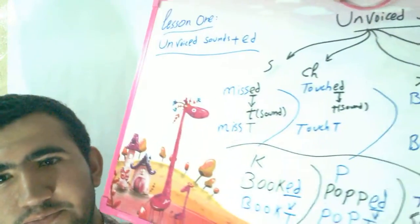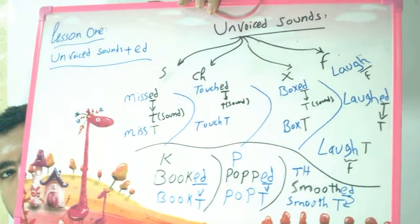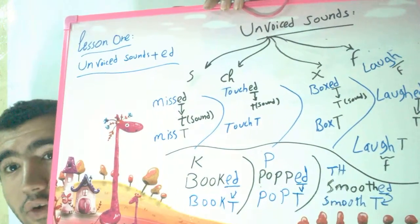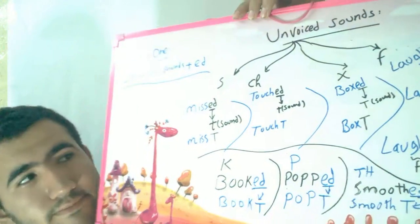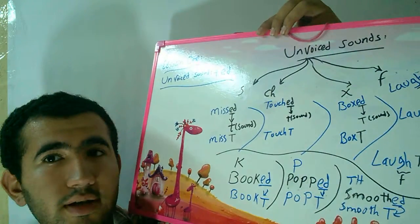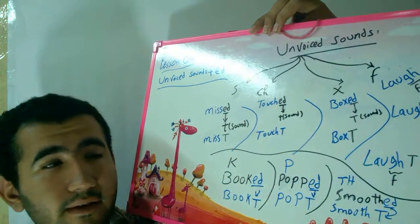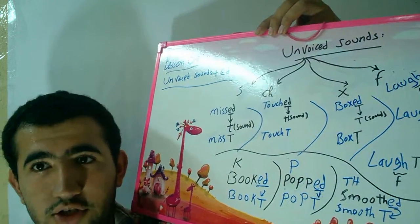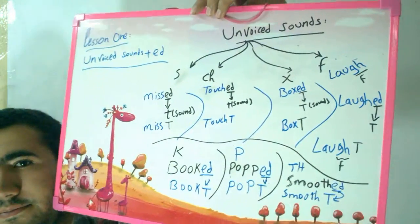Hi everyone, how are you doing? Today we're going to talk about the general pronunciation rules, and we're going to talk about the unvoiced sounds. The unvoiced sounds are, as you can see: S, CH, X, F, K, and TH.